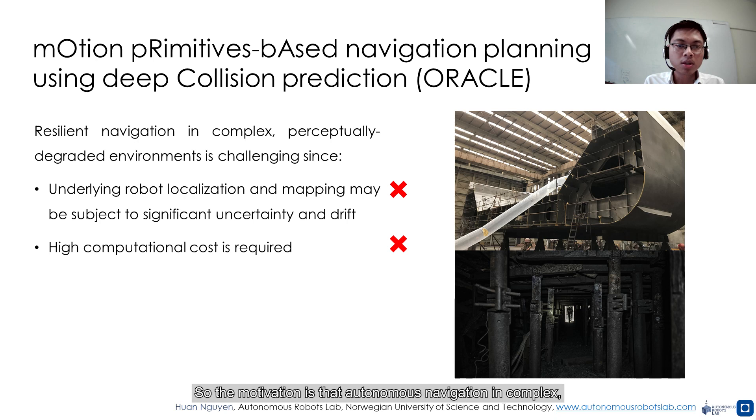The motivation is that autonomous navigation in complex, perceptually degraded environments is a particularly challenging problem, as the underlying robot's localization and mapping may be subject to significant uncertainty and drift and require high computational cost.